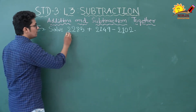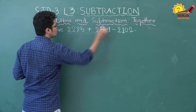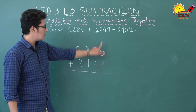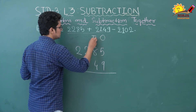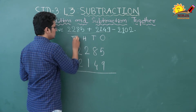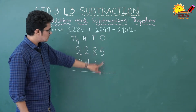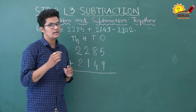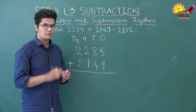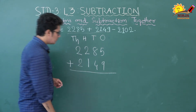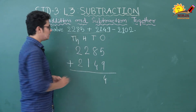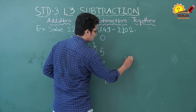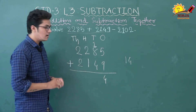So let's look at this example. First there is addition of two numbers, and then subtraction of two numbers. We will solve it step by step. First of all we will do addition of these two numbers. We will start from the ones place — this is ones place, tens place, hundreds place, and thousands place. So let's add the ones number first: five plus nine. If we add five and nine, what we get? Fourteen. So we will write four here and carry one to the next column.